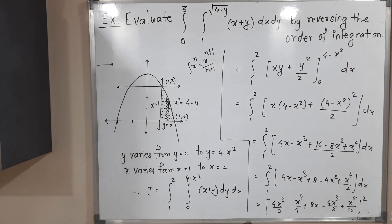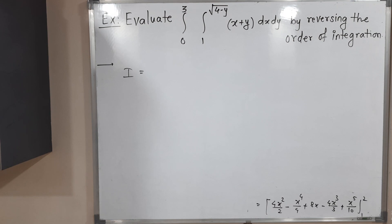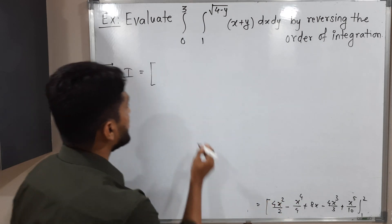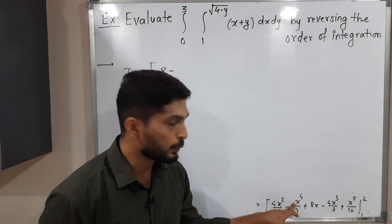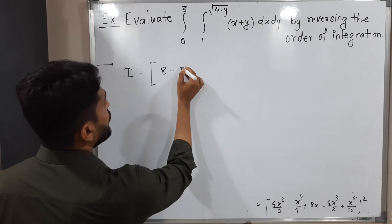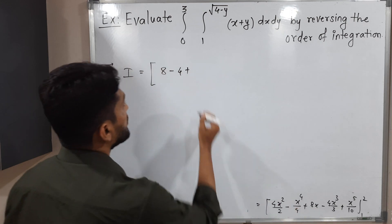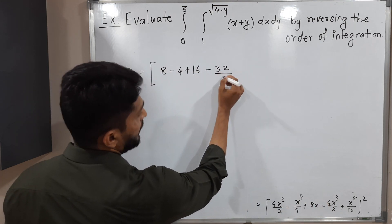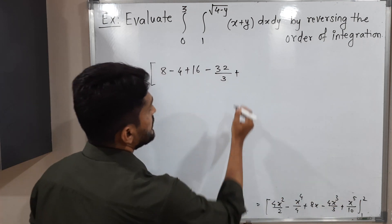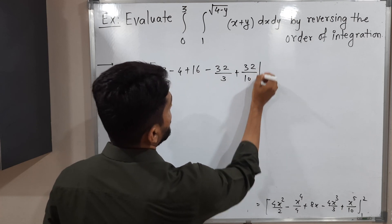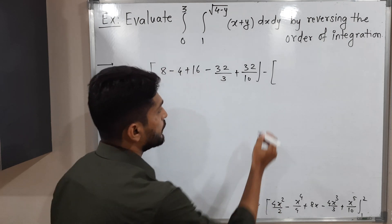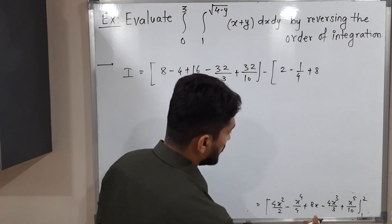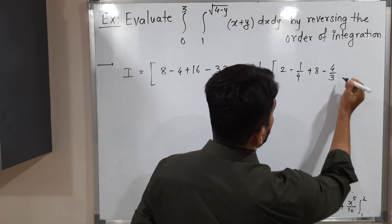Putting in the upper limit x equals 2: 2 squared is 4, times 4 gives 16 over 2 equals 8; minus 2 to the 4th over 4 equals 16 over 4 equals 4; plus 2 times 8 equals 16; minus 2 cubed times 4 over 3 equals 32 over 3; plus 2 to the 5th equals 32 over 10. Then putting in the lower limit x equals 1 gives: 4 over 2 equals 2, minus 1 over 4, plus 8, minus 4 over 3, minus 1 over 10.